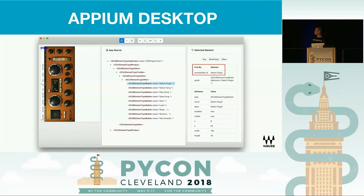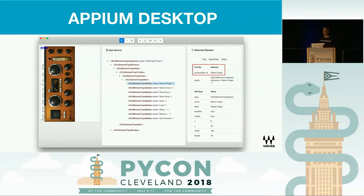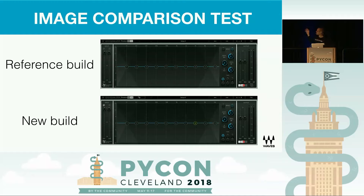In order to fetch the accessibility IDs of each of the controls, you can use Appium Desktop. It's a desktop application that you can connect to your device and basically see the tree of all the controls and elements in the GUI. So our test is simple — we want to press the select plugin button, that's going to open a menu. And we want to iterate through each and every one of the plugins. With each of the plugins we basically run an image comparison test: take a screenshot, copy it back to our Mac and see if the image matches against a reference build, which is basically a build used by our users.